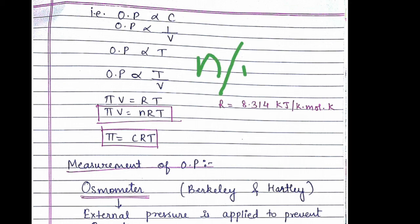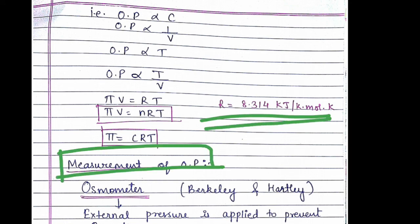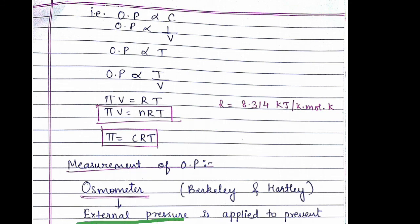The pressure is replaced with osmotic pressure, that is π. So πV is equal to nRT. We can also write n by V is equal to C, that is concentration. So π is equal to CRT, where R is the universal gas constant. The instrument used to measure osmotic pressure is osmometer, which measures the external pressure applied to prevent the osmosis.